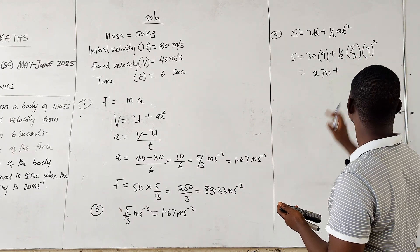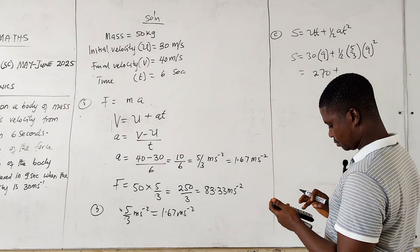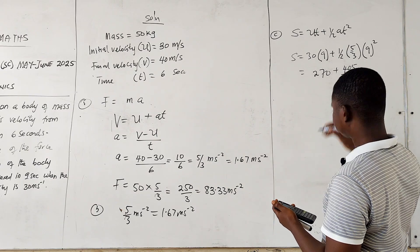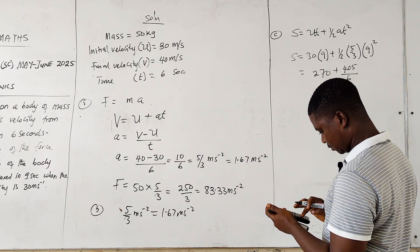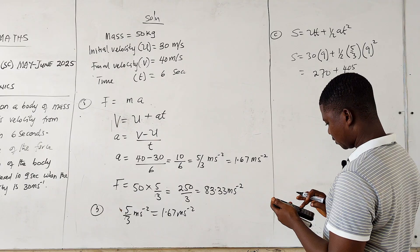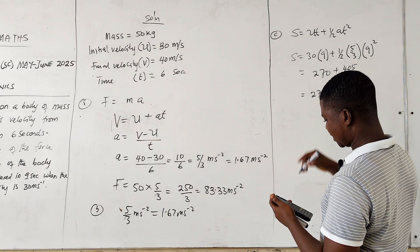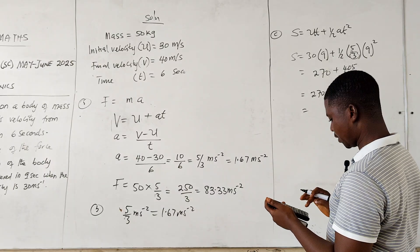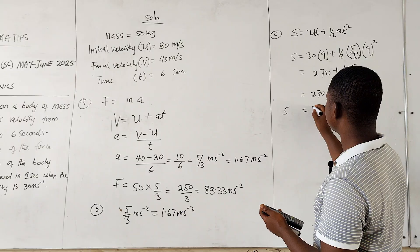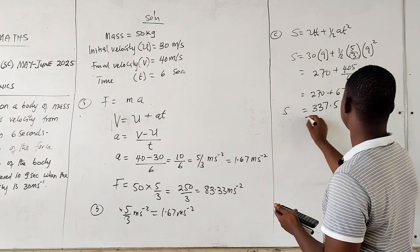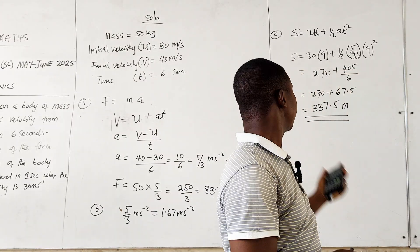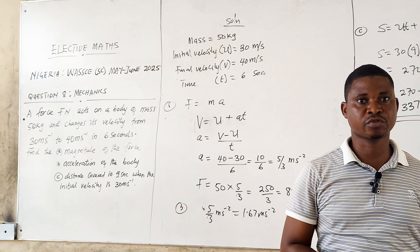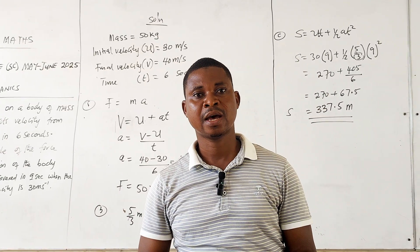Continuing the calculation: s = 270 + (81 × 5) / 6 = 270 + 405/6 = 270 + 67.5. So the distance s = 337.5 meters. That is the solution to question number eight of WAEC 2025. Continue to subscribe to François Maths Class on all our social media channels. Have a nice day, bye bye.